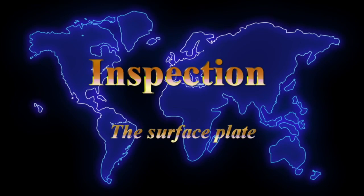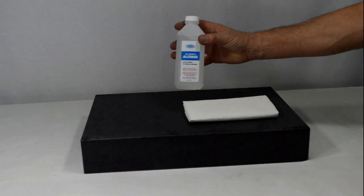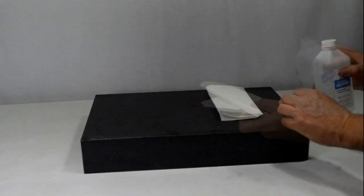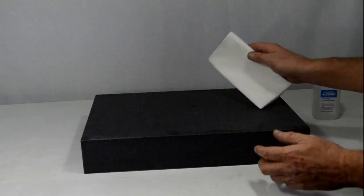Here's the identification of a surface plate. Surface plates are made of granite. Their flatness is accurate to within one tenth of a thousandth of an inch. Clean them with glass cleaner, alcohol, or surface plate cleaner.